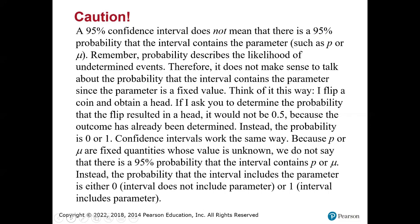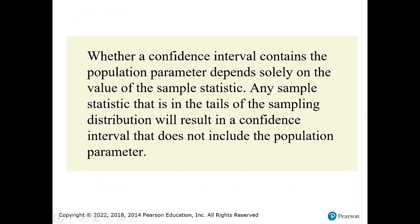A confidence interval is either yes it works or no it doesn't. Whether a confidence interval contains the population parameter depends solely on the value of the sample statistic. If I pull this sample, I'll get a slightly different sample proportion than a second sample of the same size, which is why we create that range. As long as it falls within that range, we are good — but we do know there are extreme cases that cause the parameter to be a little higher or lower, resulting in those few that do not contain the parameter.